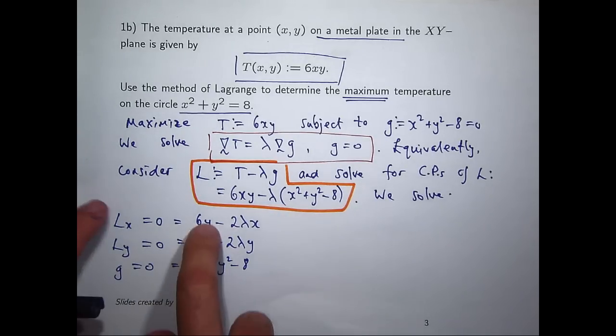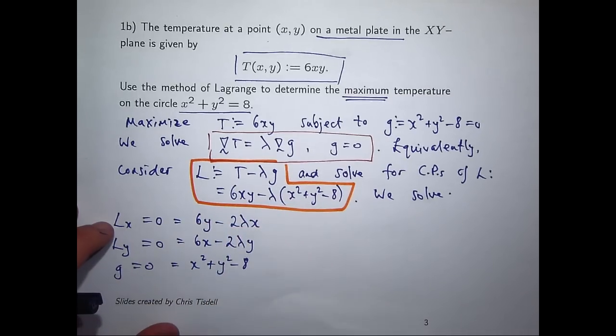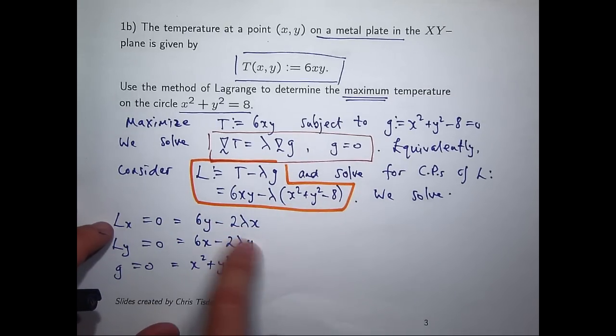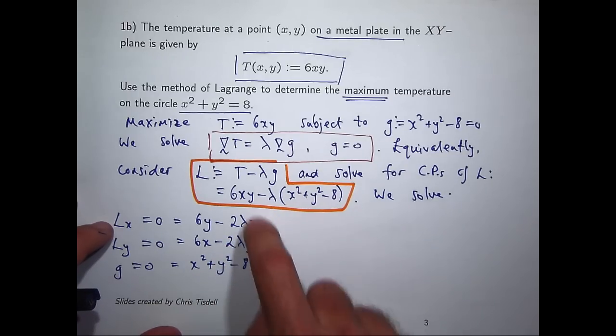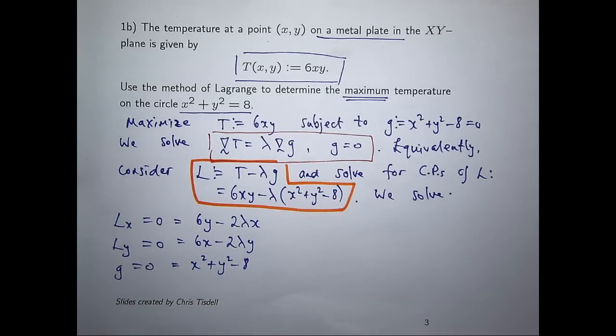If I multiply the first equation by y, I'll get 2 lambda xy there. If I multiply the second equation by x, I'll get 2 lambda xy there. So the second two terms in each equation will be identical. What I can do then is take one equation away from the other and I'll get lots of simplifications.